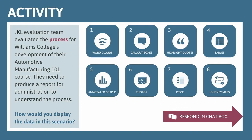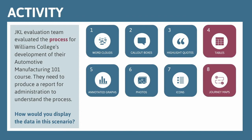Scenario three: JKL evaluation team evaluated the process for Williams College's development of their Automotive Manufacturing 101 course. They need to produce a report for administration to understand the process. Coming in pretty unanimously — journey maps. Great job! We said a journey map or possibly a table. Processes certainly are easiest to illustrate on a journey map, but a table would work too if you're not wanting to get into that more intense visualization.